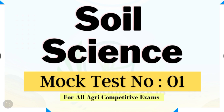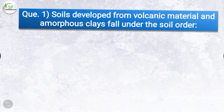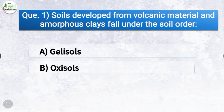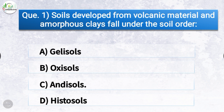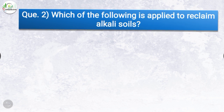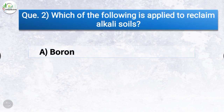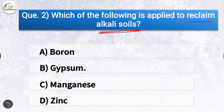Question number one: soils developed from volcanic material and amorphous clays fall under which soil order? The correct answer is option C, Andisols. Under the soil order of Andisols, the soils developed from volcanic material and amorphous clays. The next question: which of the following is applied to reclaim alkali soils?